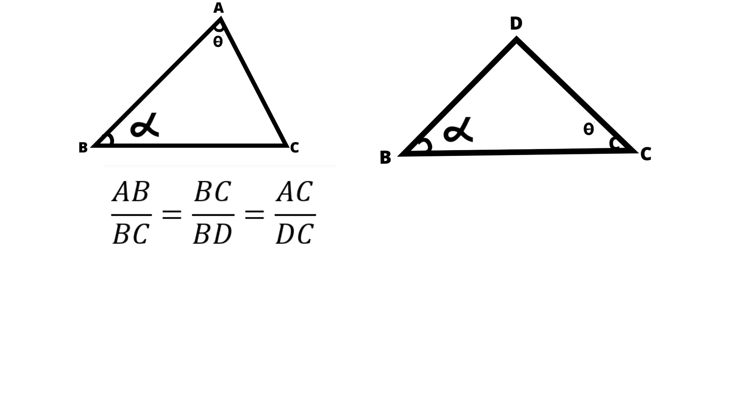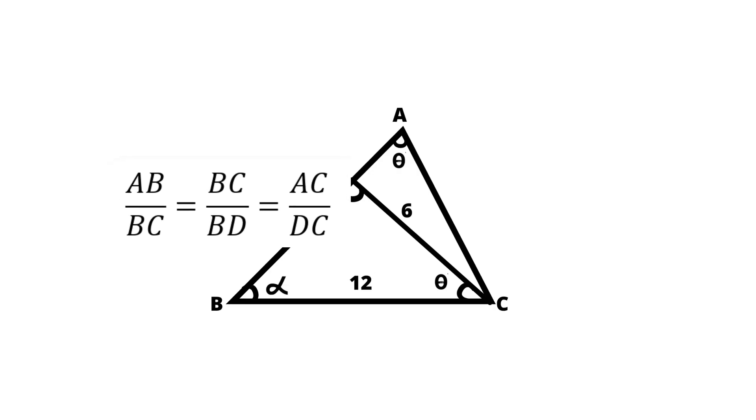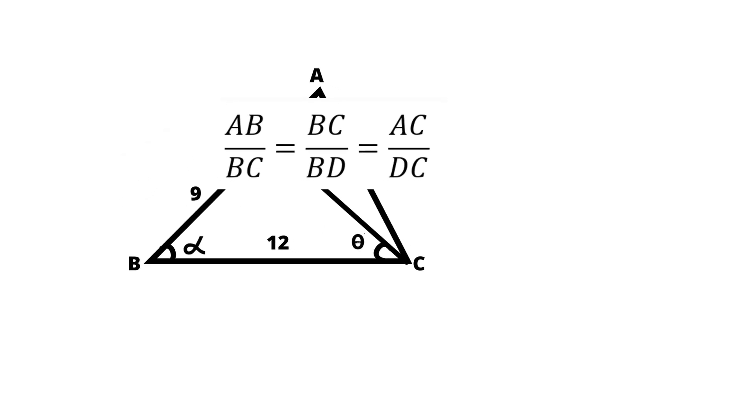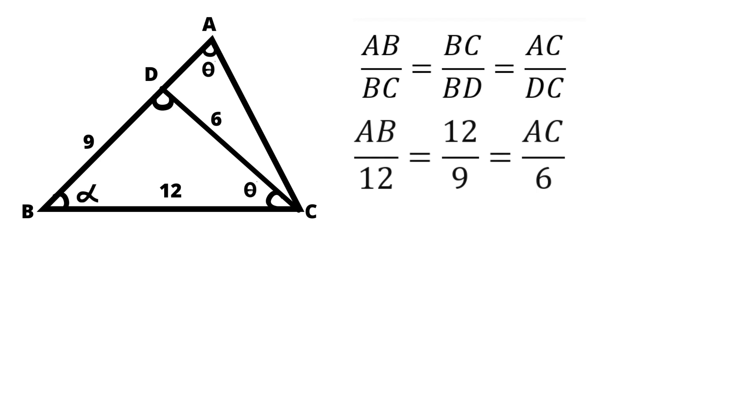Then let's try to find out the lengths of AB and AC. So we can write that AB by 12 equals, the length of BC is 12, so 12 by 9 equals AC by 6.